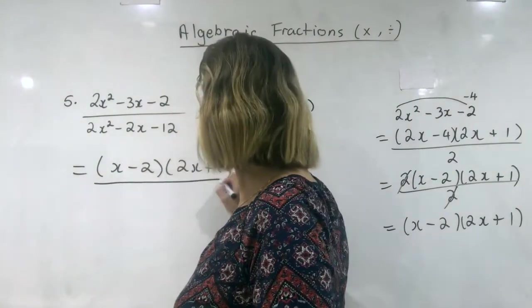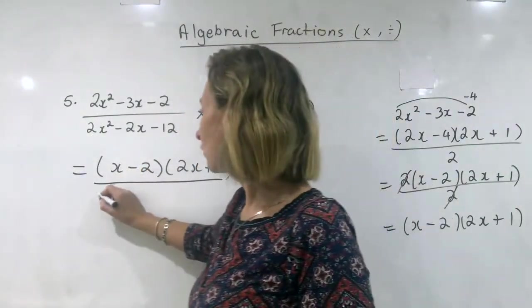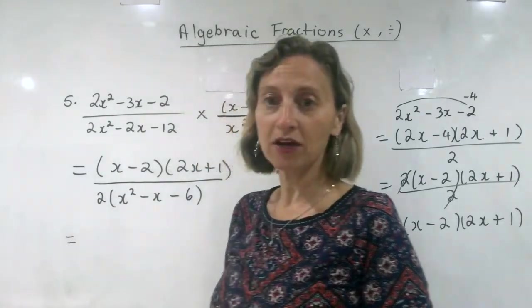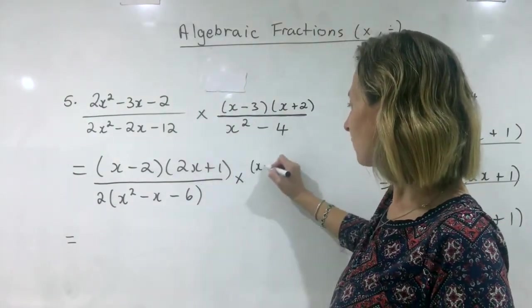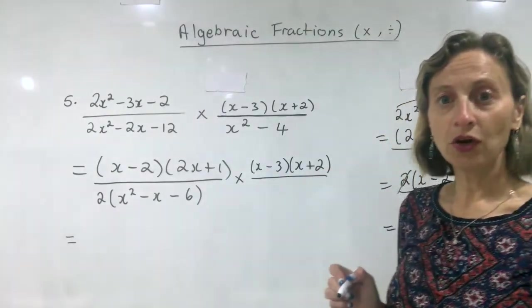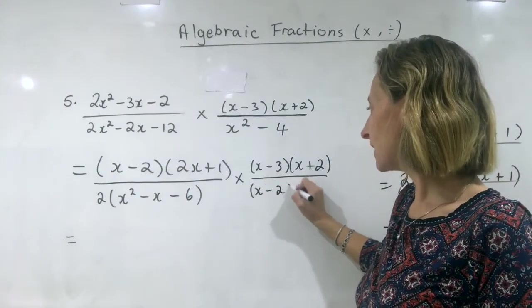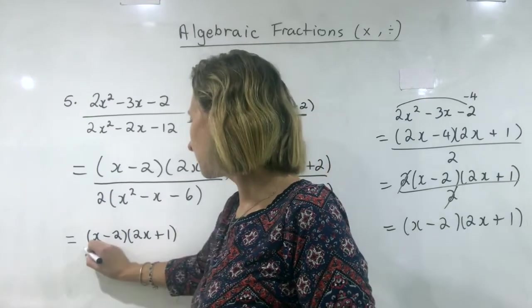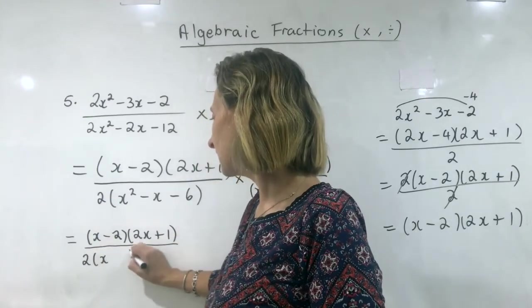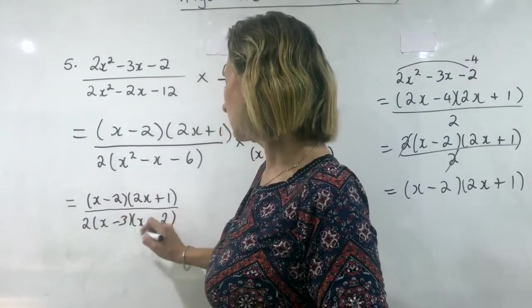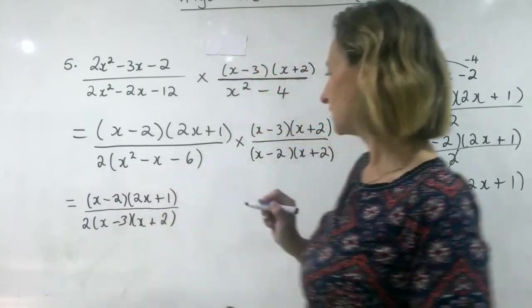Now we need to do the denominator. Hopefully you realise you can take out a common factor of two first, which means we'll need an extra line of working. Over here, the top is already factorised — lucky me. And the bottom: two terms, no common factors, which makes it the difference of two squares. Try to resist cancelling until we're finished factorising. We have a monic trinomial down here: three times two is six, minus three plus two. Minus three times plus two is minus six — all good.